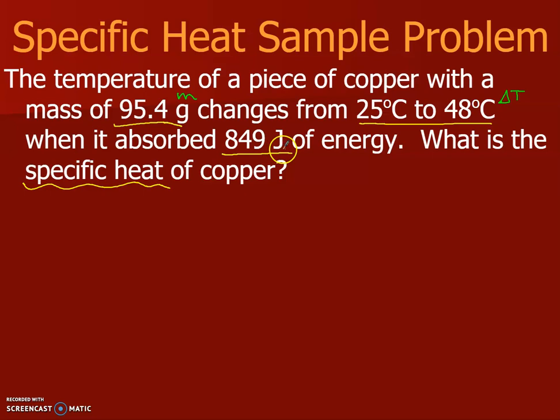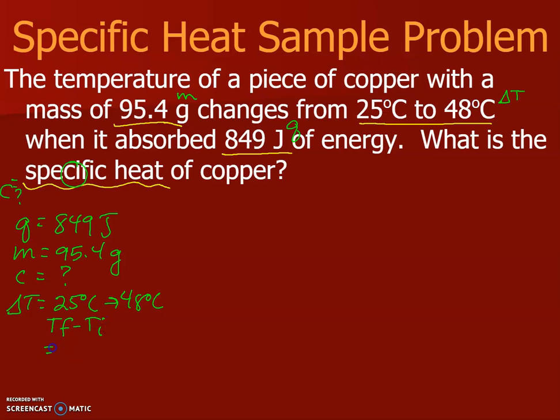So identify your variables. 95.4 grams is my mass. 25 to 48 degrees Celsius is my ΔT. It absorbs 849 joules of energy. Is that q or is that c? Well, let's look what it's looking for: what is the specific heat? Oh, that's going to be my c, so this has to be my q. So q, m, c, and ΔT. So my q is 849 joules, my mass is 95.4 grams, my c is unknown, and my ΔT goes from 25 degrees Celsius to 48 degrees Celsius. So if it's Tf minus Ti, what I'm doing is I'm taking 48 degrees and I'm subtracting 25 degrees, so my ΔT is going to be 23 degrees Celsius.